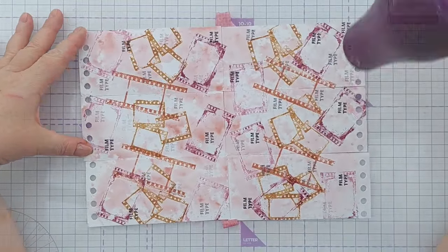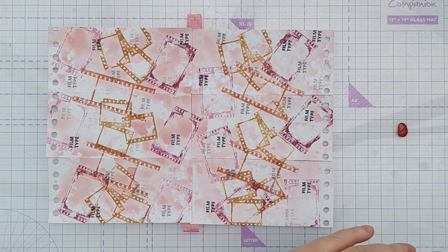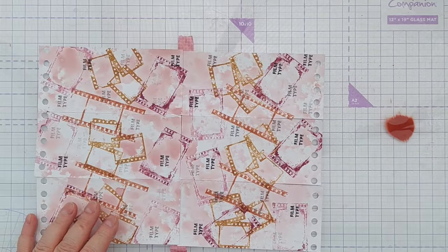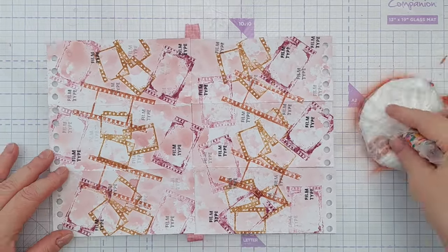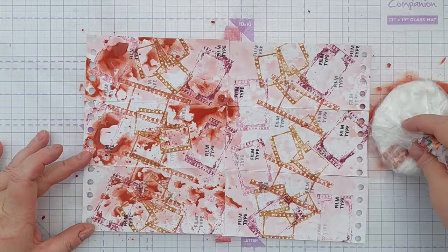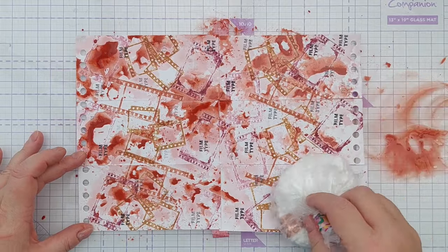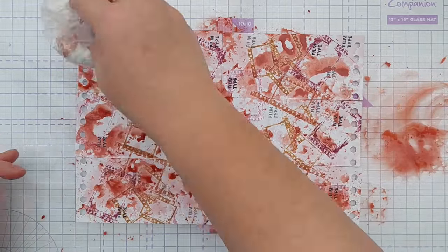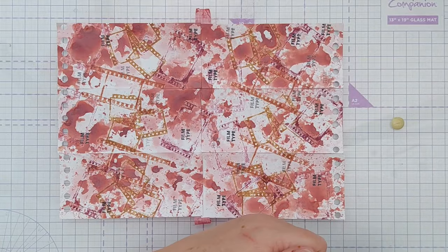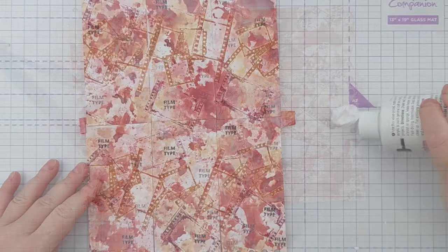Then I took some Aged Mahogany Distress Oxide. I'm using the re-inker here because I don't have the ink pad. I put a couple of drops on my mat, squirted it with water to make a paint again, picked it up with my smusher and smushed it all over, but not quite as much as I did with Victorian Velvet because I wanted the Victorian Velvet to peek through. And then again I did the same thing but I used Antique Linen, again a re-inker because I haven't got the ink pad for this.